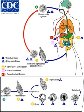Entamoeba histolytica ingests the destroyed cells by phagocytosis and is often seen with red blood cells, a process known as erythrophagocytosis, inside when viewed in stool samples. Especially in Latin America, a granulomatous mass known as an amoeboma may form in the wall of the ascending colon or rectum due to long-lasting immunological cellular response, and is sometimes confused with cancer. Theoretically, the ingestion of one viable cyst can cause an infection.